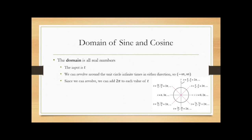The domain of sine and cosine is all real numbers. It just means you can plug anything into a trig function, because your input T is just your distance around the circle, which is a real number. You can travel the circle as many times as you want in any direction, so you can travel it an infinite number of times in the positive or negative direction.